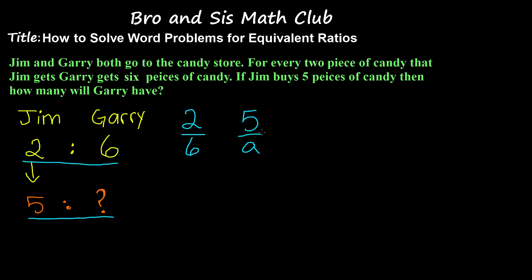Okay, so now we have to cross multiply these two fractions. I'm going to cross multiply 2 by a and then I'm going to cross multiply 6 by 5. Two times a gives us 2a and 6 times 5 gives us 30.